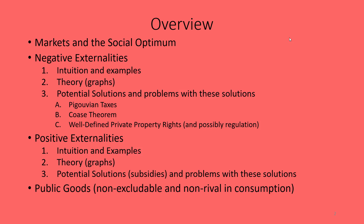We're going to talk about markets and the social optimum, which is kind of what we talked about in Chapter 3. Then we'll discuss how negative externalities impact that market — first the intuition and examples, then the theory, which is the graph and math part, and then some potential solutions and problems. The solutions we'll cover are Pigouvian taxes, the Coase theorem, and well-defined private property rights accompanied by regulation.